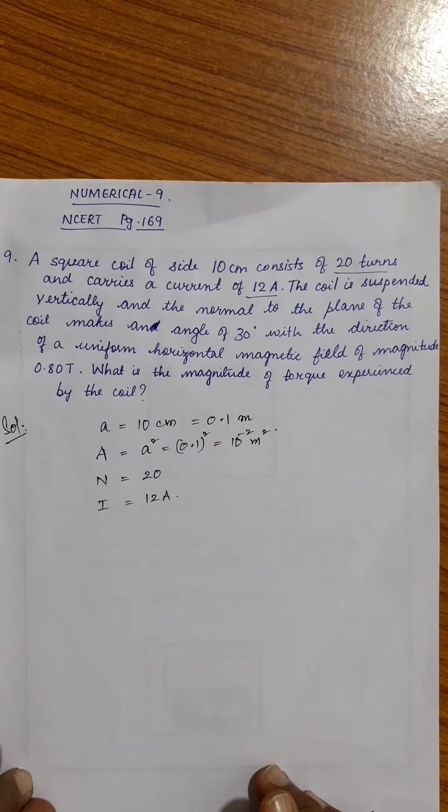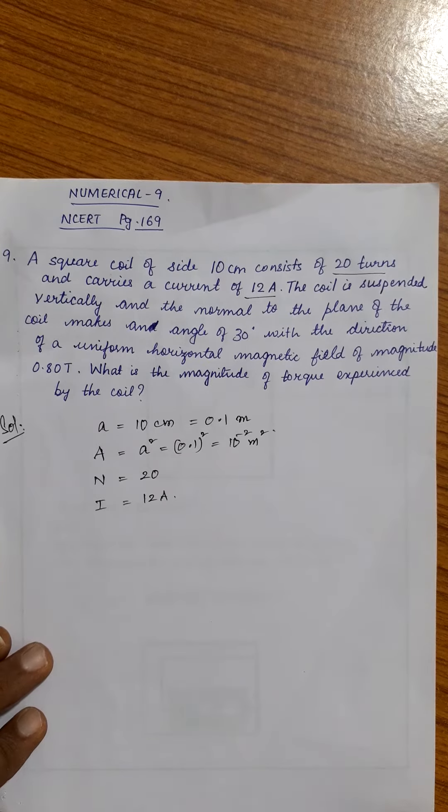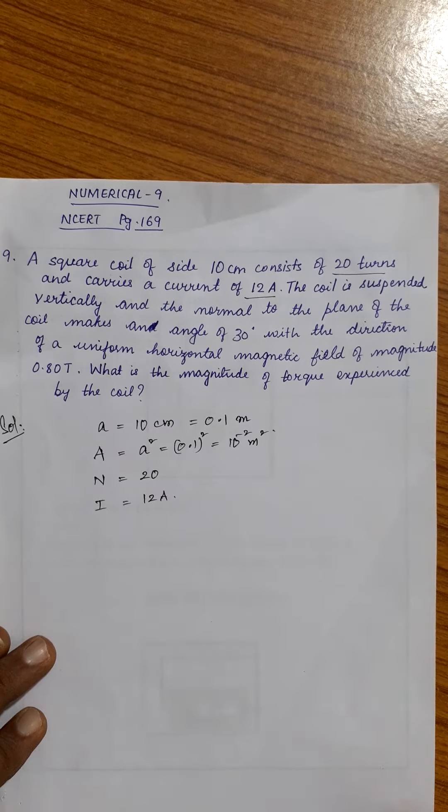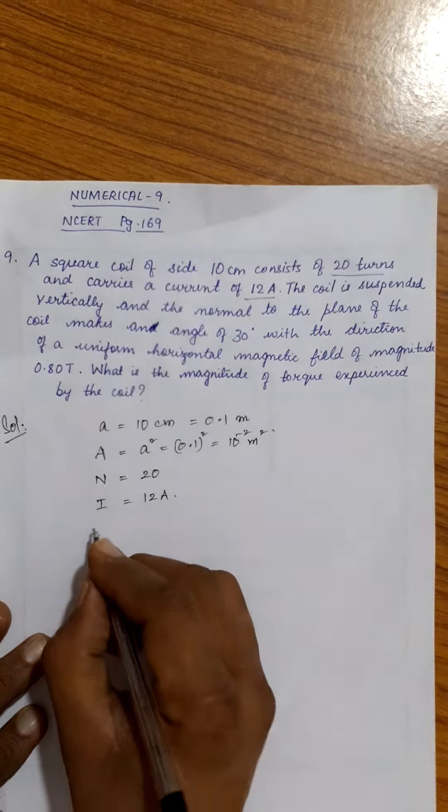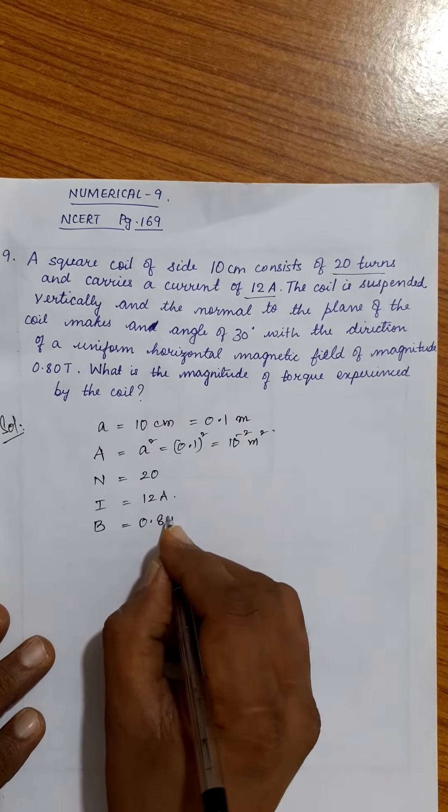It is given that the coil is suspended vertically and the normal to the plane of the coil makes an angle of 30 degree with the uniform magnetic field, horizontal magnetic field of magnitude 0.8 tesla. The magnetic field is given to you as 0.8 tesla.